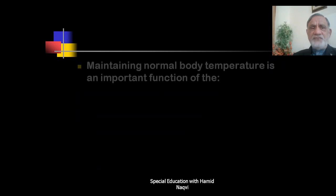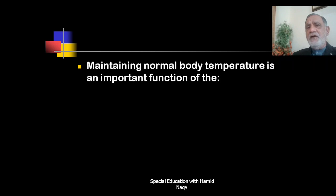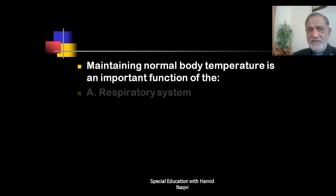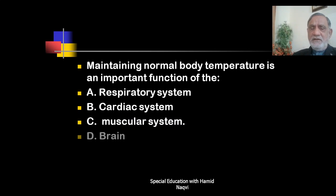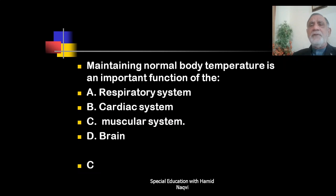Next question: Maintaining normal body temperature is an important function of which system — the respiratory system, cardiac system, muscular system, or brain? The correct answer is C — maintaining normal body temperature is an important function of the muscular system.